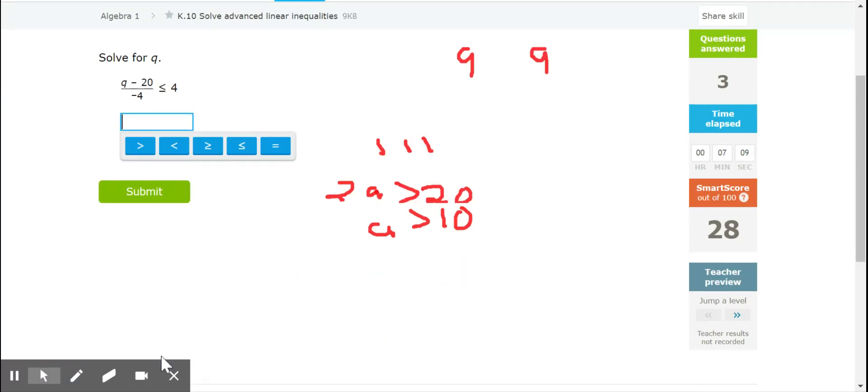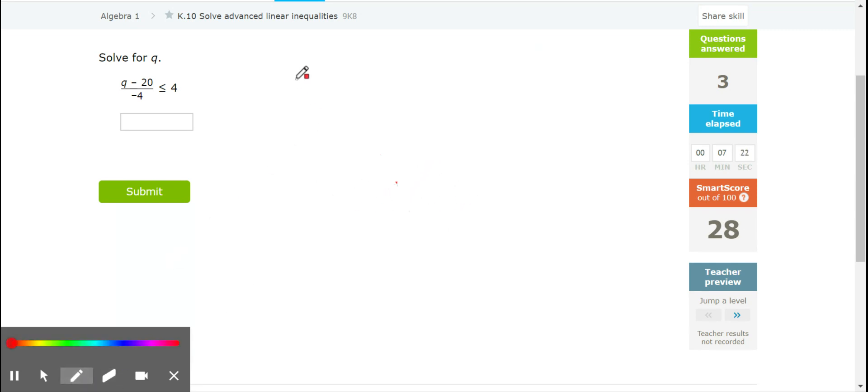Now things look a little bit more intimidating, but they're not. Realize a fraction, fraction bar implies parentheses. So really, if I wanted to write this, this is Q minus 20 in parentheses over negative 4. And it's less than or equal to 4.